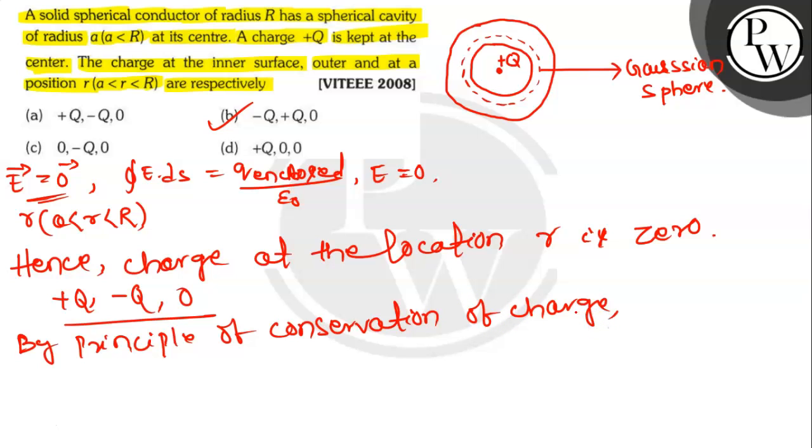total charge on outer surface and inner surface and the interior is 0. Inner surface has a charge of minus Q, and the interior has 0. Hence, the outer surface has a charge of plus Q.